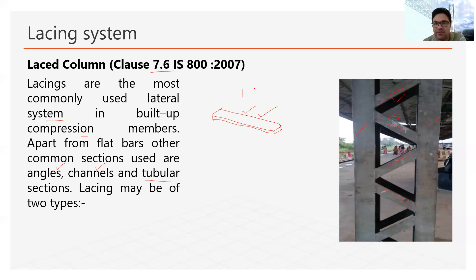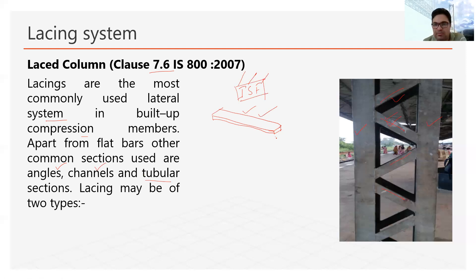We call the flat bar ISF — ISF stands for Indian Standard Flat: I for Indian, S for Standard, F for Flat. The dimension B refers to the width of the flat bar or width of the lacing bar, and the thickness refers to the thickness of the lacing bar.